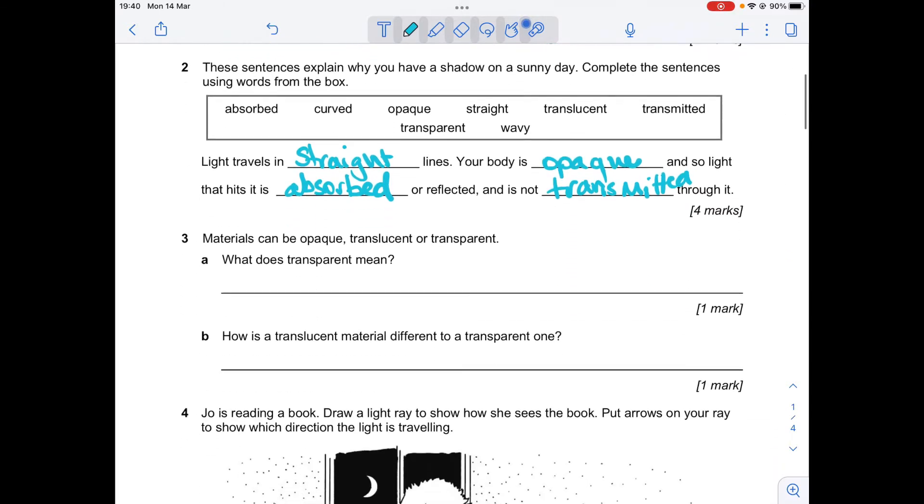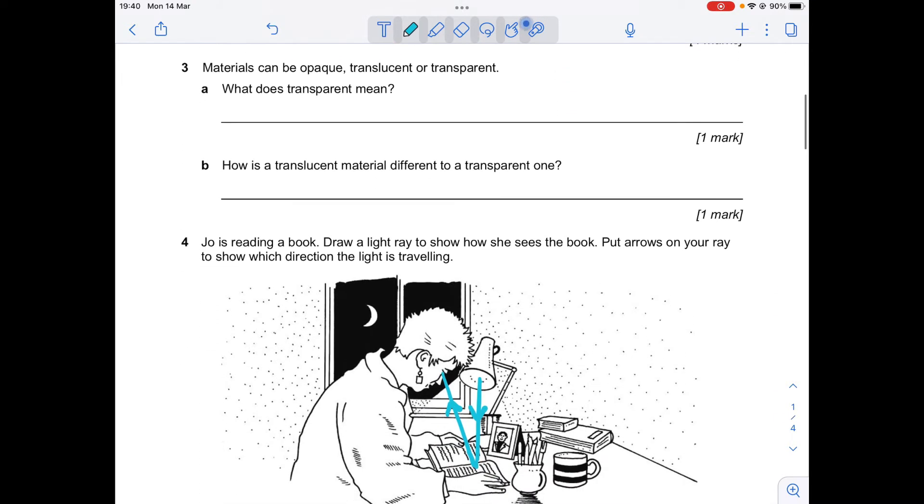Materials can be opaque, translucent, or transparent. What does transparent mean? So transparent means that light can pass through it or that the object will transmit light.